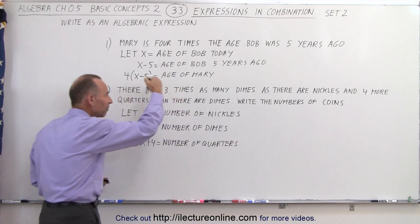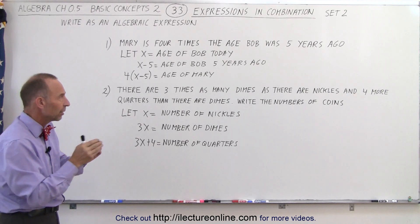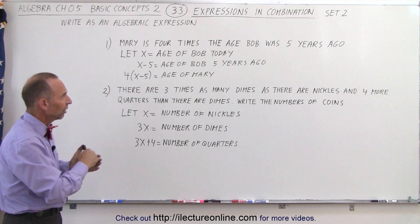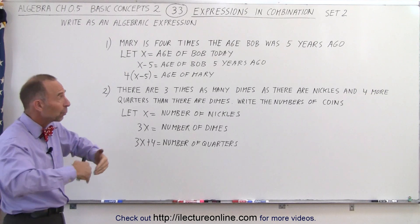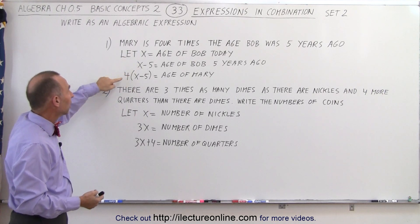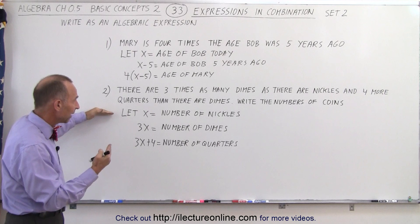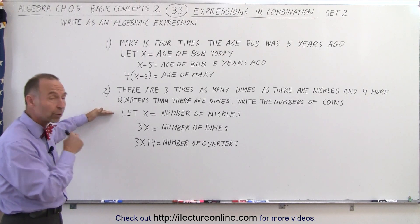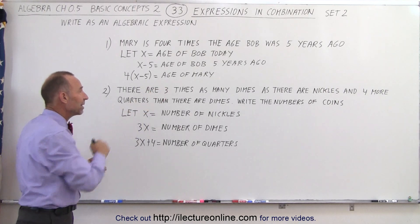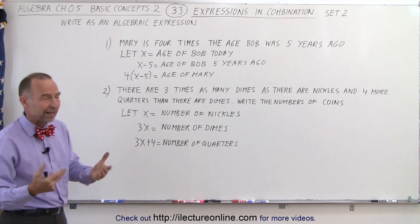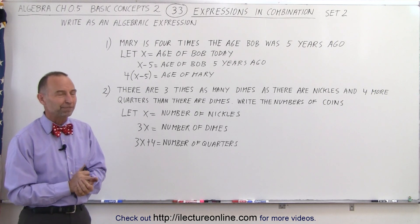So you can see that we can systematically work in steps to find the expression we're looking for, and it's always a good idea to let the unknown variable be the least quantity that we can start with. Since Bob was younger than Mary, we let x equal the age of Bob today, then adjusted it for five years ago, and then Mary was four times that. Same here — we recognized that the number of nickels was the fewest coins, so we let x be that smallest number. Three times x was three times as many dimes as nickels, and four more than that is the number of quarters. And that's how we build up our expressions in algebra.